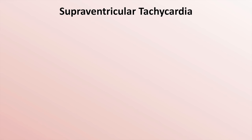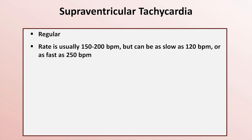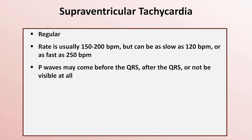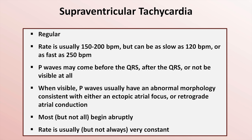Despite their varied mechanisms, all SVTs share common EKG features. They are all highly regular. Rates tend to be in the neighborhood of 150 to 200 beats per minute, but can rarely be as slow as 120 or as fast as 250. The P-waves may come before the QRS, after the QRS, or not be visible at all — meaning they occur simultaneously with the QRS. When visible, P-waves usually have an abnormal morphology consistent with either an ectopic atrial focus or retrograde atrial conduction. Most SVTs begin abruptly, and the rate is usually very constant.